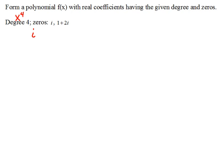Okay, so if I have a zero at i, then that means I must also have a zero at negative i because of the complex conjugate. If I have a zero at 1 plus 2i, then I must also have one at 1 minus 2i because of the complex conjugate. Now we have four zeros, which we know we should have because a degree four polynomial has to have four zeros.